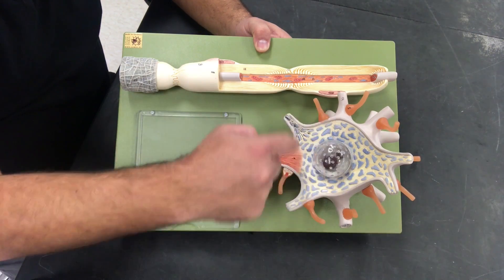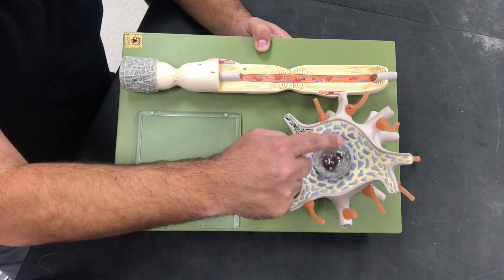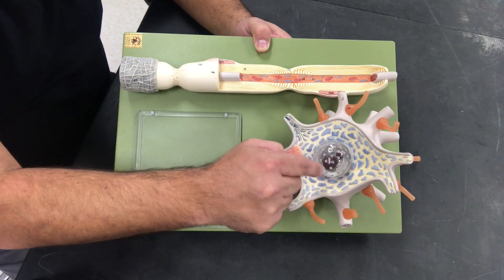So we're going to start right here at the soma. We have this nice little clear ball. This is going to be our nucleus.